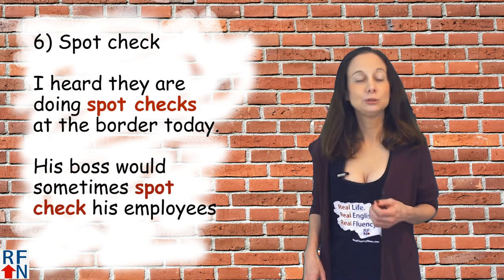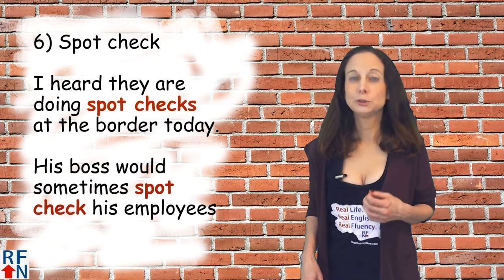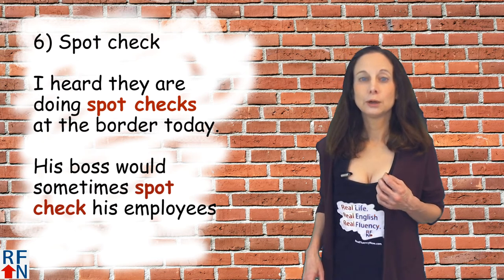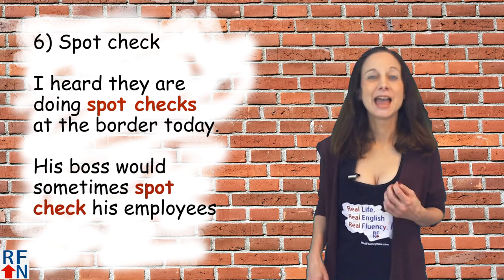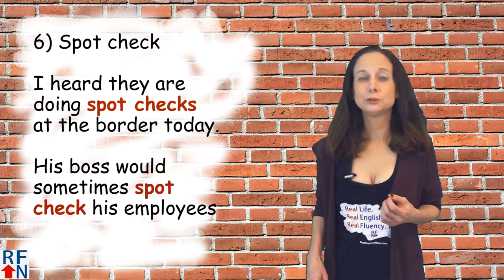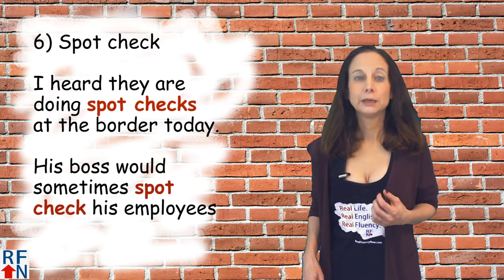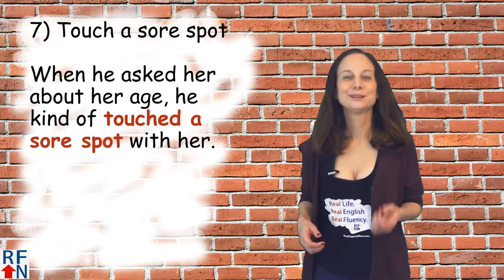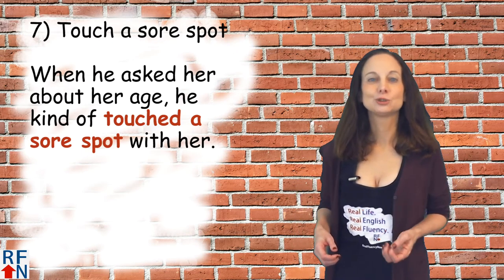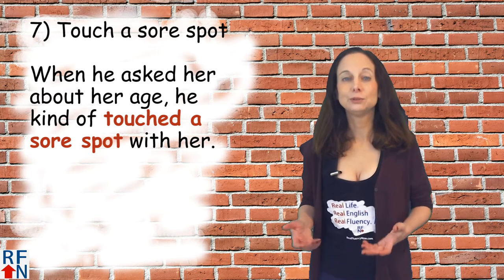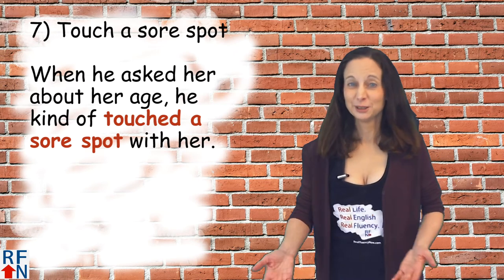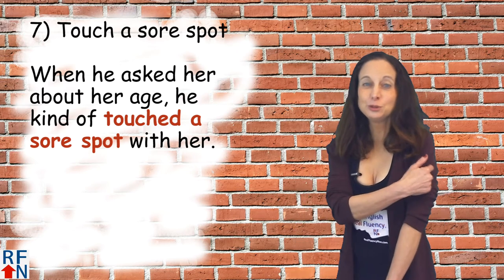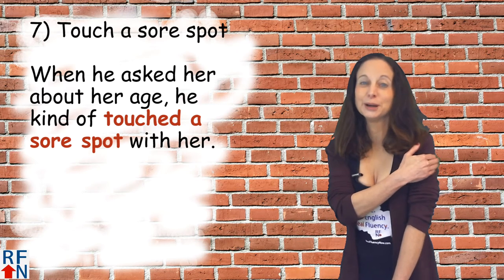Number six is 'spot check,' which can be used as a noun or a verb. It means a check or inspection that is random or only lasts a very short amount of time, as in 'I heard they're doing spot checks at the border today' or 'his boss would sometimes spot check his employees.' Number seven is 'to touch a sore spot.' This can be literal — if you have a sore spot on your body and somebody touches it, it hurts. For example, I got a flu shot yesterday and I have a sore spot on my arm.